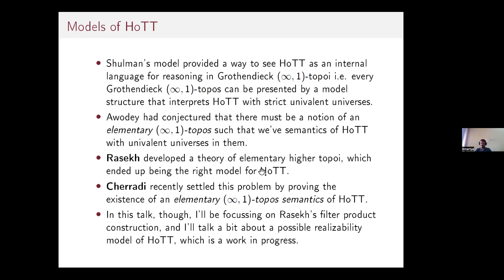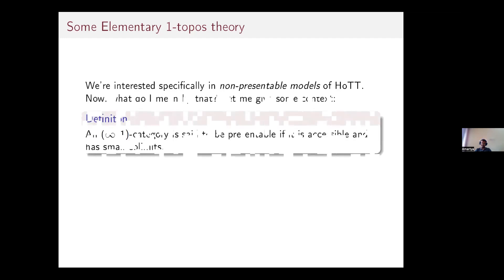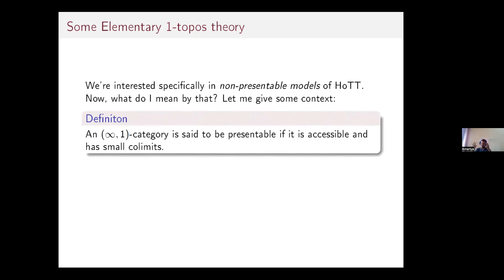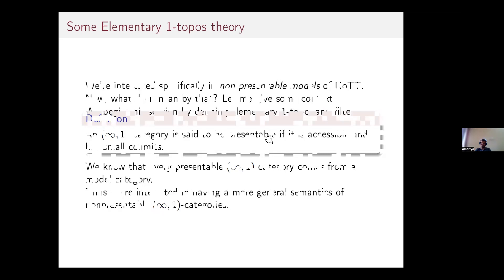In this talk I'll focus on Rasek's filter product construction and talk about a possible realizability model of HoTT. We are specifically interested in non-presentable models. An infinity-one category is presentable if it is accessible — meaning it is generated under filtered co-limits by some suitable subcategory — and has all co-limits. Every presentable infinity-one category comes from a model structure, so we are interested in the more general semantics of non-presentable infinity-one categories.